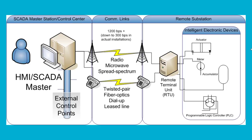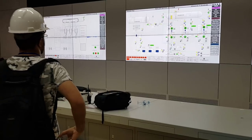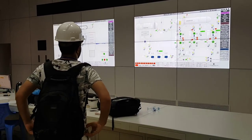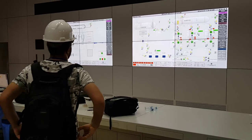Now if you have RTU, it needs to have some communication network to send the data to the master control room. For that, either you are using a radio microwave system, or you are using twisted pair fiber optics, and there might be other options also. The whole purpose of RTU is to gather data from field devices — which can be actuators, valves, electrical machines, PLCs — and then RTU shares that data via communication network to the master control room, where you have HMIs and different operator screens to visualize and control that information.